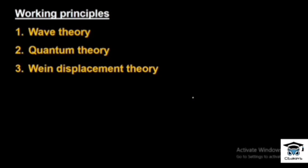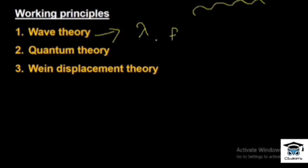We need to learn some theories about the transmission of electromagnetic radiation. One is the wave theory: we need to understand wavelength and frequency. The wavelength lambda is inversely proportional to frequency. That is one main theory of electromagnetic radiation.